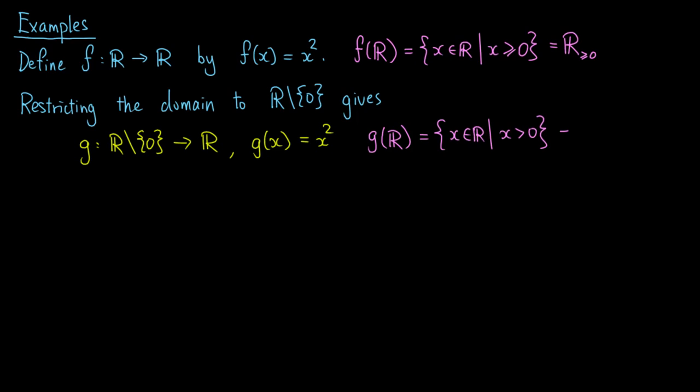and the image of g is the set of real numbers x such that x is positive. Notice that zero is not in the image of g, but it is in the image of f.